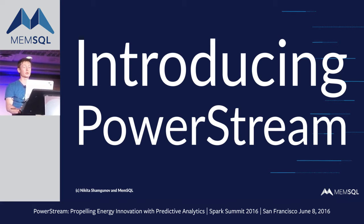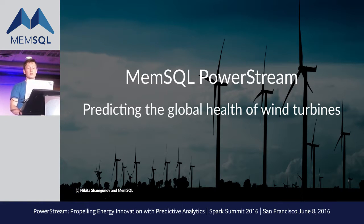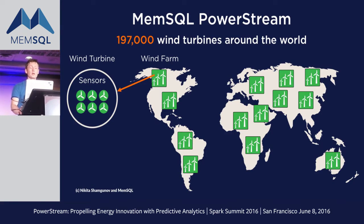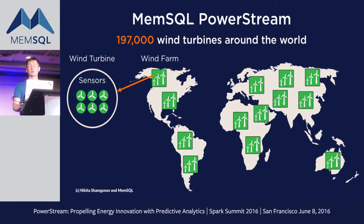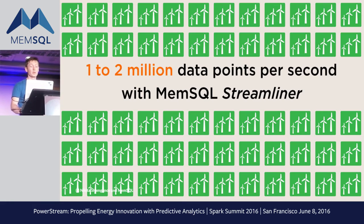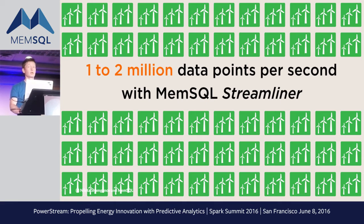I want to introduce PowerStream. What is PowerStream? It's an application that is predicting the global health of wind turbines. There are about 200,000 wind turbines around the world, and each turbine streams its data. There are a bunch of sensors in turbines and they produce a lot of data — one to two million data points per second globally. If you want to predict the health of wind turbines, you need to learn from that data, and luckily we have Spark and MLlib to build predictive models.